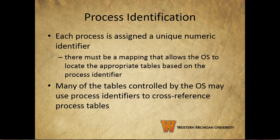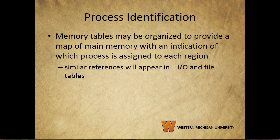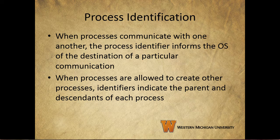A very important part of the way an operating system handles processes is process identification. In most operating systems, each process is assigned a unique numeric identifier. There must be a mapping that allows the OS to locate the appropriate tables based on the process identifier. Many of the tables controlled by the operating system use process identifiers to cross-reference process tables. Memory tables can be organized to provide a map of the main memory with an indication of which process is assigned to each region, and this works the same way with input-output and file tables. Process identification is also very important when processes need to communicate with each other or when one process needs to spawn a child process.